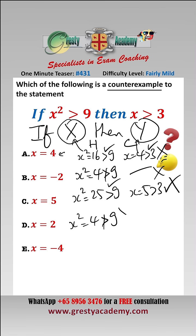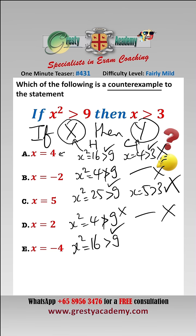x equals 2: well, x squared is equal to 4, which is not greater than 9, so the hypothesis is not even true. This is irrelevant — it is not a counterexample.